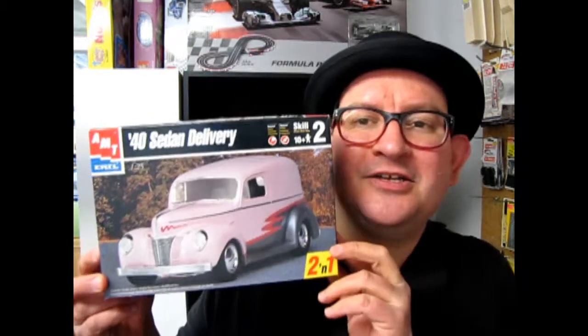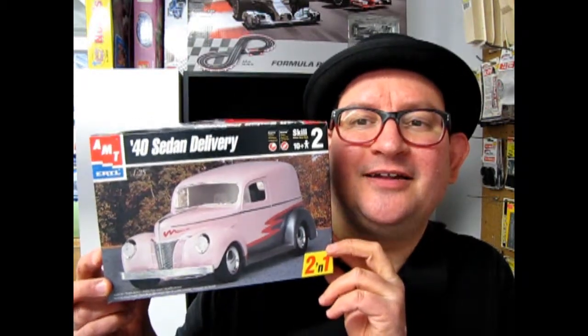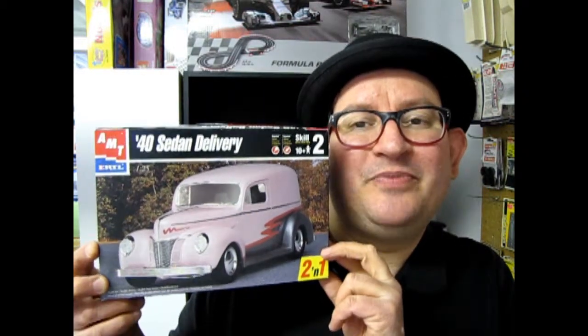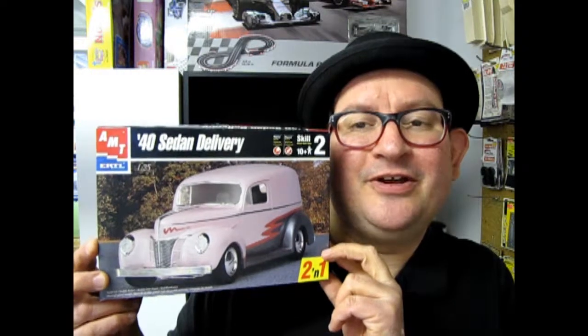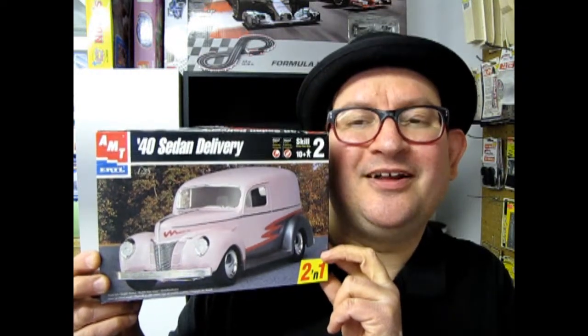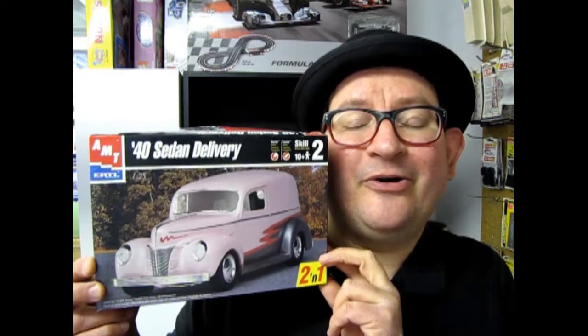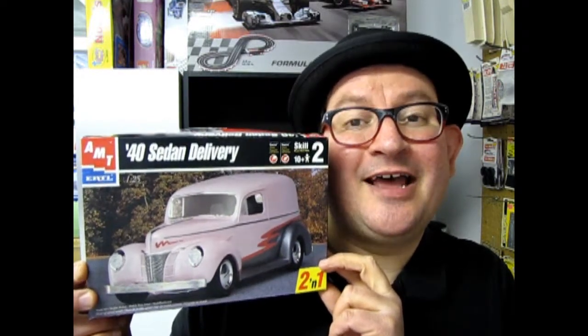Welcome back to another episode of the 1940s version of Monster Hobby's What's in the Box? And I say that because we're going to be looking at the 1940 sedan delivery Ford kit from AMT. So don't let the pink and silver scare you off because we're going to take a look at what's underneath the lid right now. So let's go down to our bench and have a look.